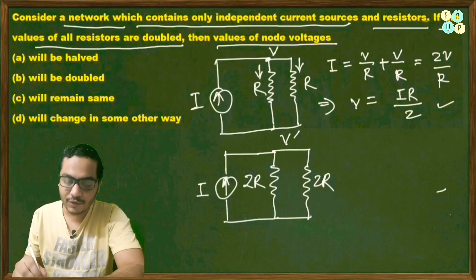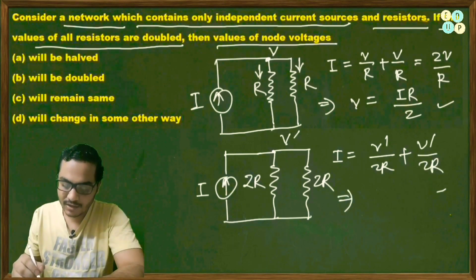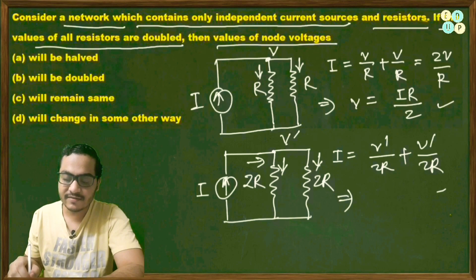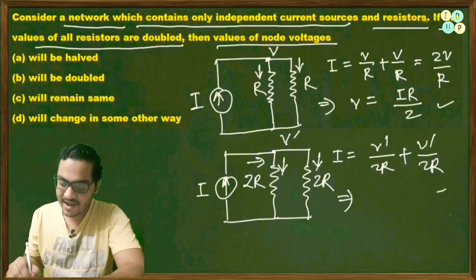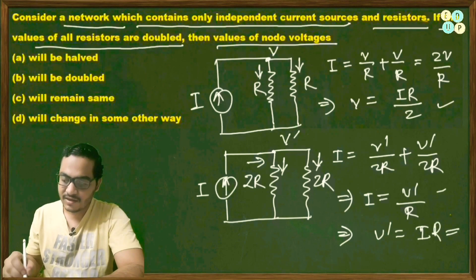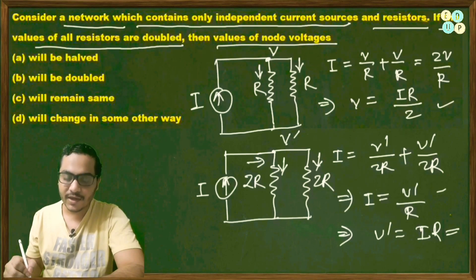Applying KCL to node v': i = v'/2R + v'/2R, which gives i = v'/R, so v' = i·R. Comparing: originally v = i·R/2, and now v' = i·R. So the node voltage is doubled when the resistances are doubled, making option B the right answer.